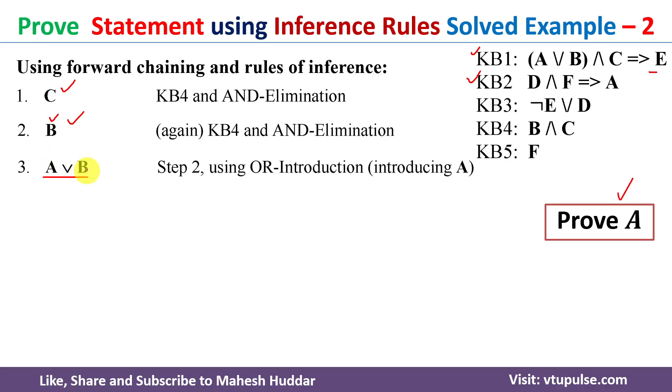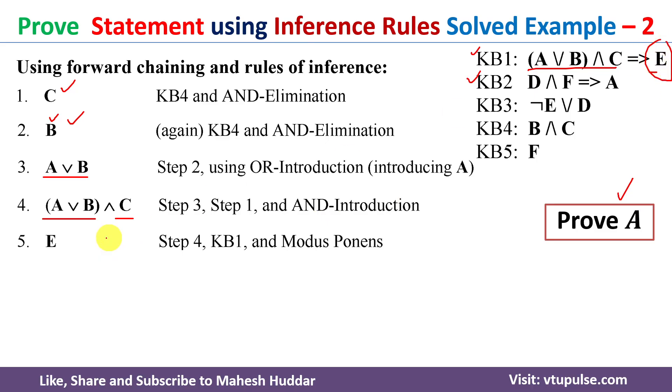Now we have A or B, and C is also available. With the help of one and three, I will introduce AND. I will get A or B and C. So now we got A or B and C, which is present over here also. A or B and C implies E. If you apply the modus ponens rule between these two things, we will get E.